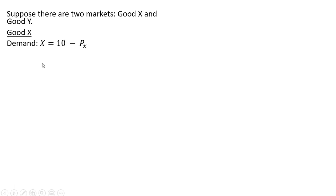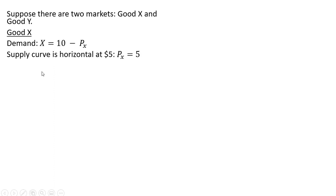Good X is characterized by the following demand equation. X is units of good X, and we have P subscript X, the price of good X. The supply curve is going to be perfectly elastic, or horizontal, at a price of $5. So the price in this market is currently $5.